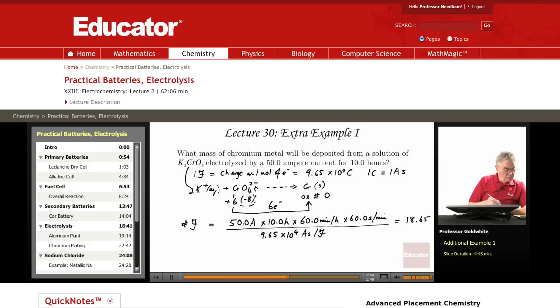Therefore, the number of moles of chromium deposited equals 18.65 faradays times 1 mole of chromium for every 6 faradays. If 1 atom of chromium is deposited by the action of 6 electrons, 1 mole of chromium is deposited by the action of 6 faradays. And that equals 3.1 moles.